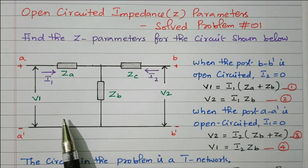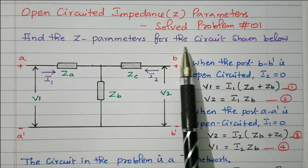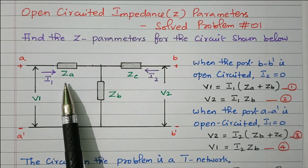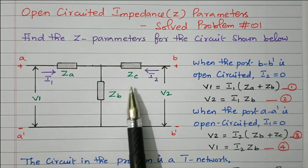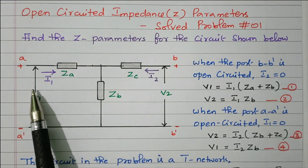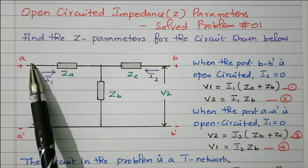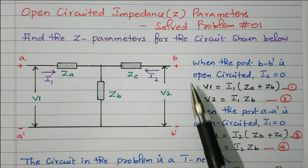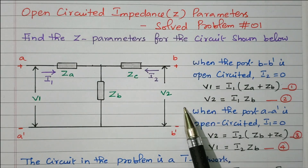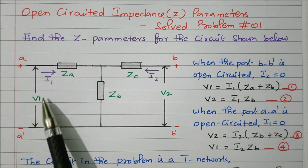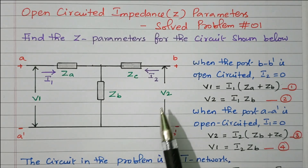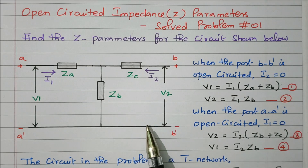Now we will refer the diagram. Find the Z parameter for the network shown below. This network has three impedances available: ZA, ZB, ZC. This is a two port network. AA dash is the input port, BB dash is the output port. V1 is the input voltage, I1 is the input current, V2 is the output voltage, and I2 is the output current.